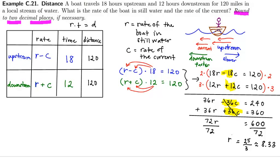Since the rate of the boat in still water is 8.33 miles per hour, I can easily find the rate of the current by plugging this value r back into one of the equations and solving for c. So I'll go ahead and use the second equation and solve for c.